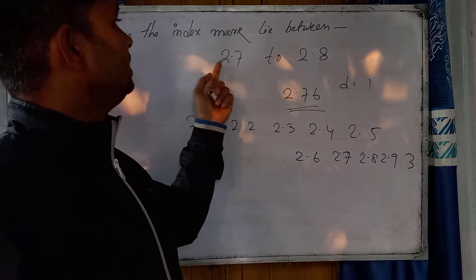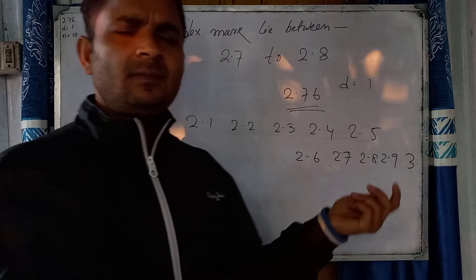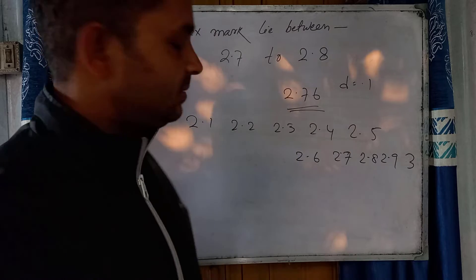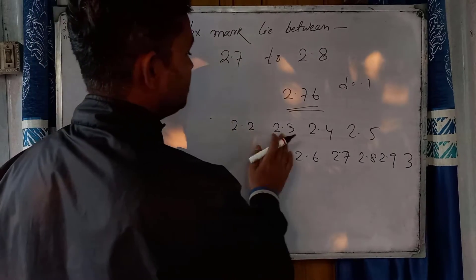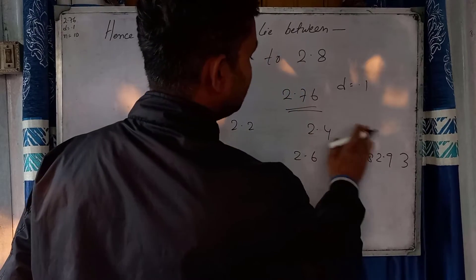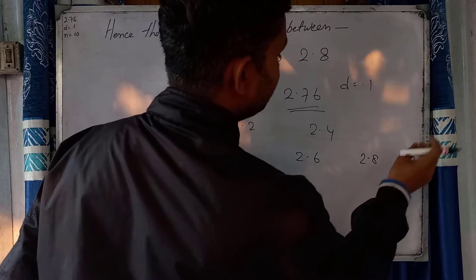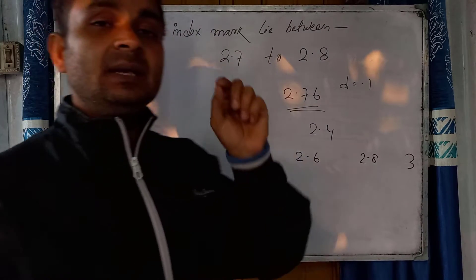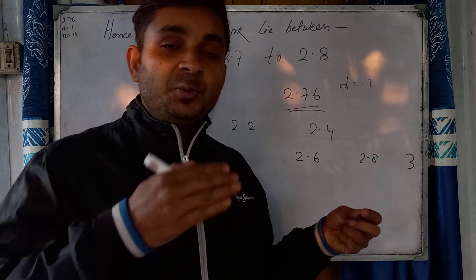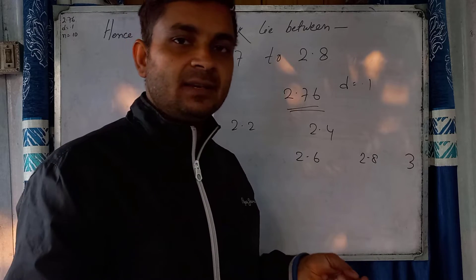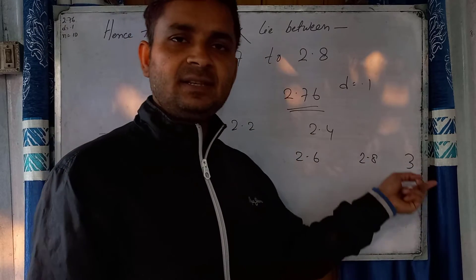If D is 0.2 — just think about this case — then the divisions would be 2.2, 2.4, 2.6, 2.8, 2.9, then 3, because the least count of the main scale division is 0.2. If you divide by 0.2, your values would be 2.2, 2.4, 2.6, 2.8, then 3. So any division T where D equals 0.2 gives divisions at 2.1, 2.2, 2.3, but our reading is 2.76.